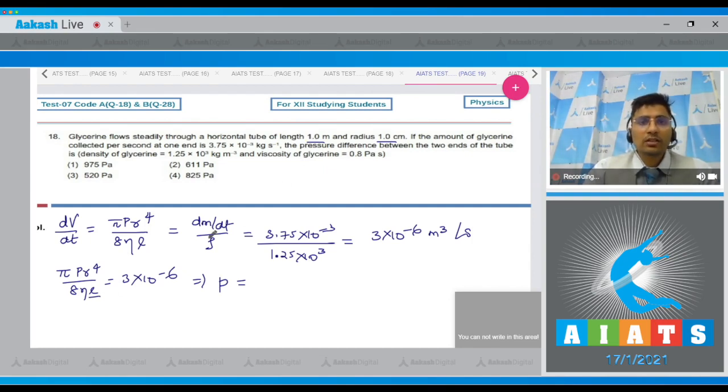Eta that is viscosity is also given the pressure turns out to be equal to 611 pascals meaning for this question the correct answer is option 2.